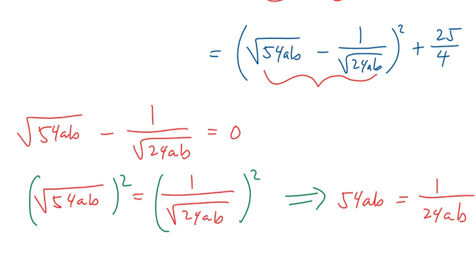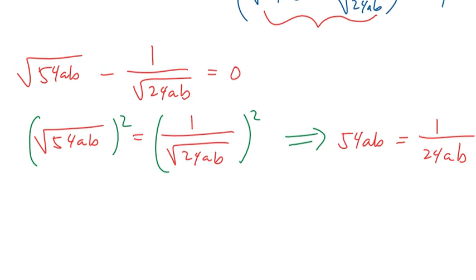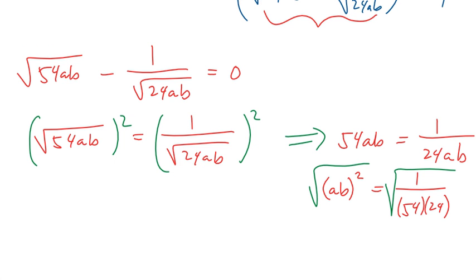Solving for ab, we get (ab)² = 1/(54 × 24). Then taking the square root of both sides, we see that ab = 1/36.